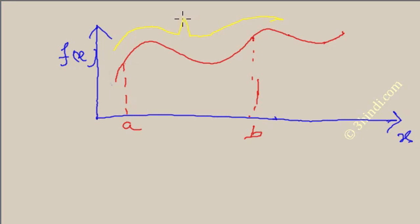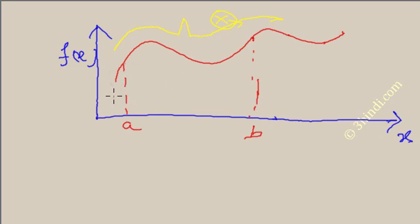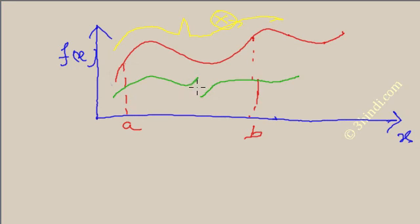If the graph is like this — you can see that at this point the function is not differentiable — so this type of function, the yellow colored function, does not fulfill the mean value theorem criteria. Also, if the graph is something like this where between A and B the f(x) value is discontinuous, then here also the mean value theorem is not applicable.